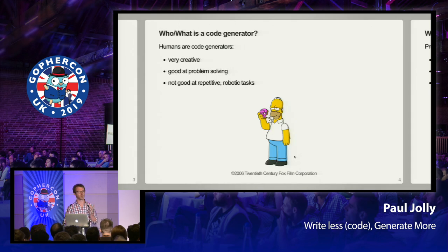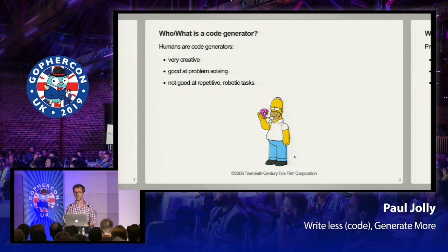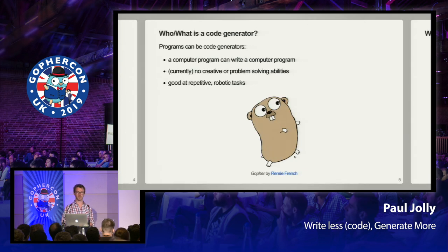Has anybody written any Go code? Everyone in here is a code generator of sorts. Humans are very good code generators because we're very creative when it comes to solving and thinking about complex problems. But we're not very good at repetitive robotic tasks — I really hate repetitive robotic tasks, particularly when it comes to writing code. That's why I'm a big fan of code generation.